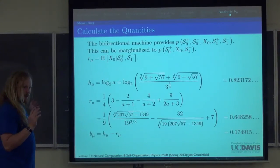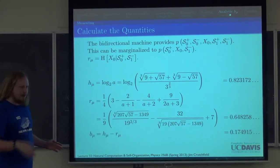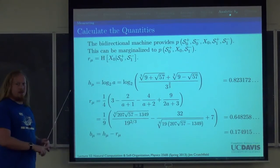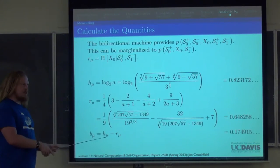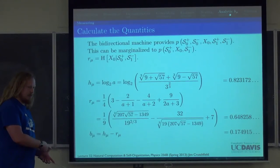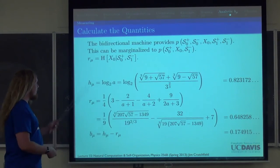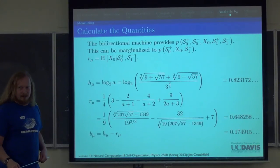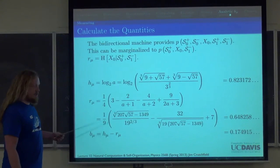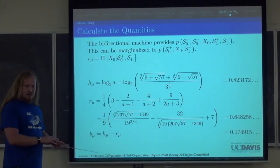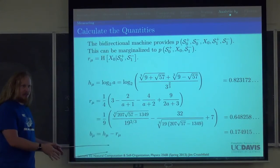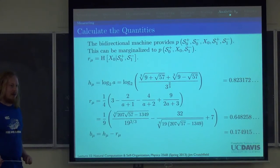So we've started with the tent map, isolated a single parameter, constructed a Markov partition, a Markov chain, a hidden Markov model, an epsilon machine, a reverse epsilon machine, and a bidirectional epsilon machine — and from that computed h_μ, r_μ, b_μ, the excess entropy, c_μ, and any other quantity we're interested in. This is a complete analytic example of going from a dynamical system to understanding how it stores and processes information.